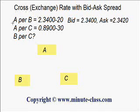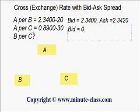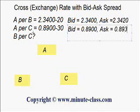This is a direct quote because it is DC per FC. Similarly, the second rate is also a direct quote. The dealer in country A is willing to bid for currency C by paying 0.8900 currency A, but they ask people to pay 0.8930 currency A to them in order to buy currency C.